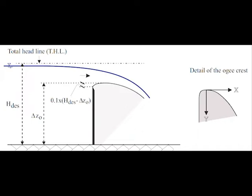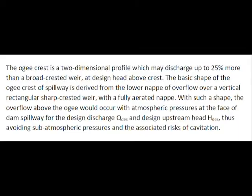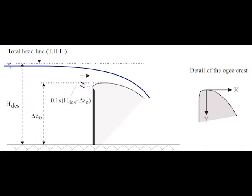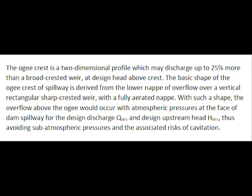The ogee-crest is a two-dimensional profile which may discharge up to 25% more than the broad-crested weir at design head above crest. The basic shape of the ogee-crest spillway is derived from the lower nappe of the overflow over a vertical rectangular sharp-crested weir with a fully aerated nappe.